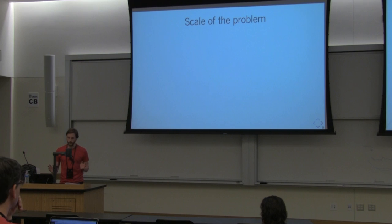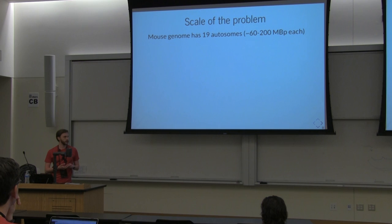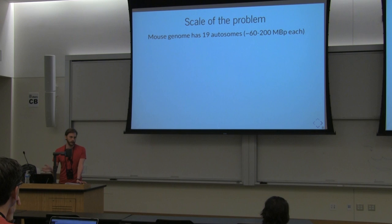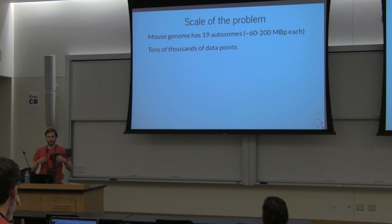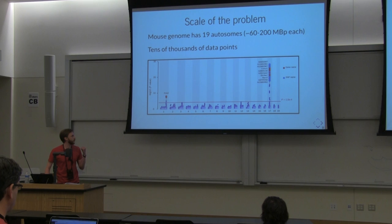To give you an idea of the scale of the problem a genome browser needs to solve: the mouse genome has 19 autosomes — autosomes are all the chromosomes that aren't sex chromosomes. Each autosome has between 60 and 200 million base pairs or nucleotides. In a given dataset we can have tens of thousands of data points, so you can imagine it's quite a lot of data to deal with, especially if it's going to be an interactive and fluid experience.